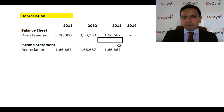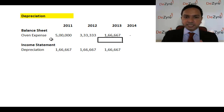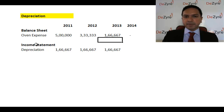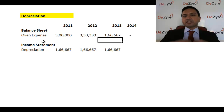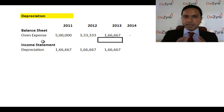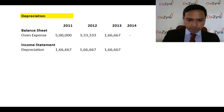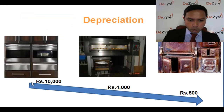Depreciation is not just used for new items. If you're doing maintenance activities on existing items — say spending fifty thousand rupees in the third year to increase the life of an oven — you would still capitalize that expenditure and depreciate it over a period of time.